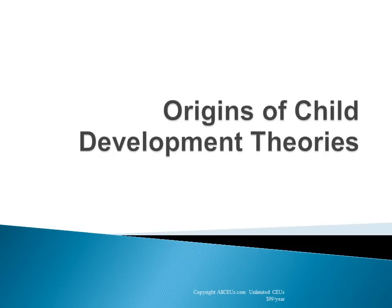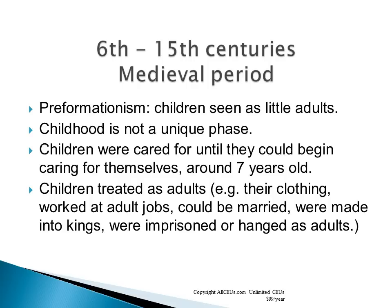Child development theory started a long time ago. During the medieval period, children were seen as little adults. Childhood was not a unique phase, and children were usually only cared for until they could begin caring for themselves around seven years old. Children wore adult clothing and worked adult jobs.